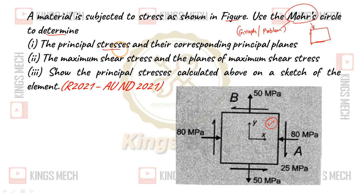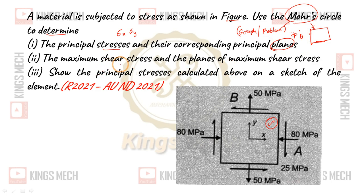What we have to find is the principal stresses and the corresponding principal planes. The stresses are sigma x, sigma y, and the corresponding principal planes are phi — that is theta. And then maximum shear stress, tau max — that is theta and the planes. We also show the principal stresses calculated above on a sketch of the element.